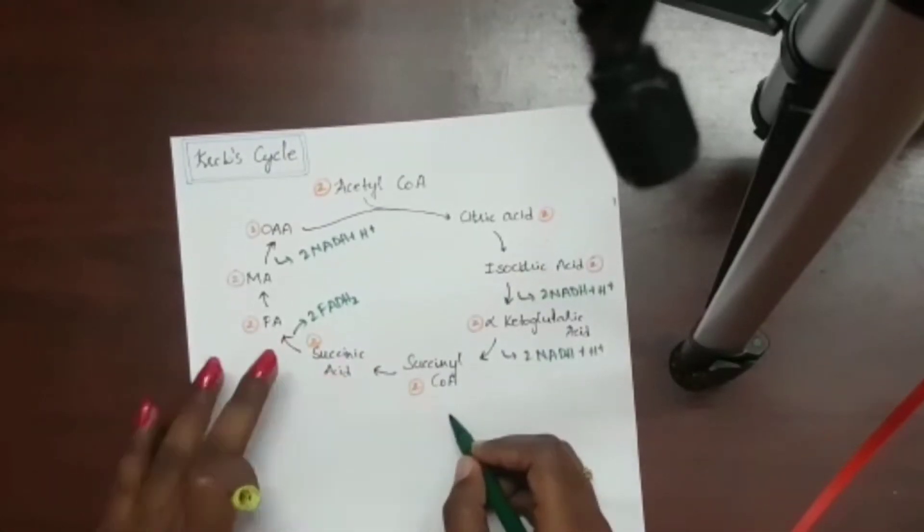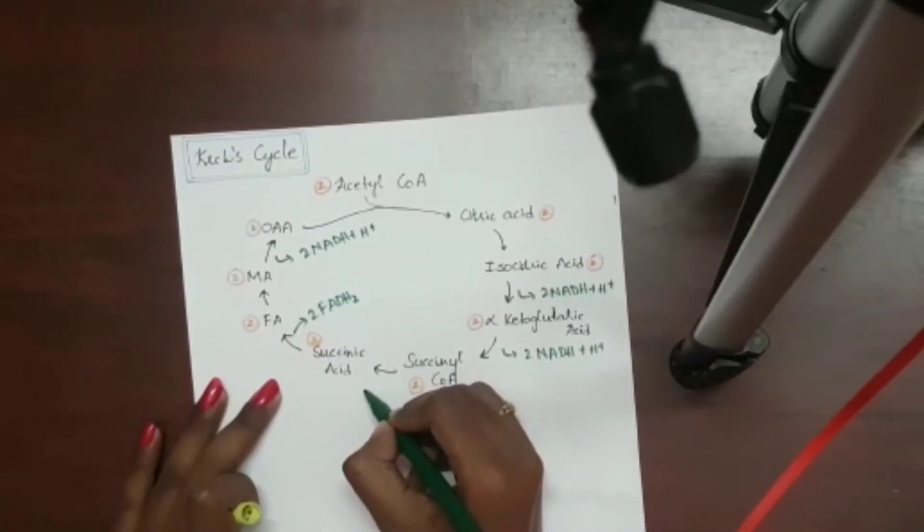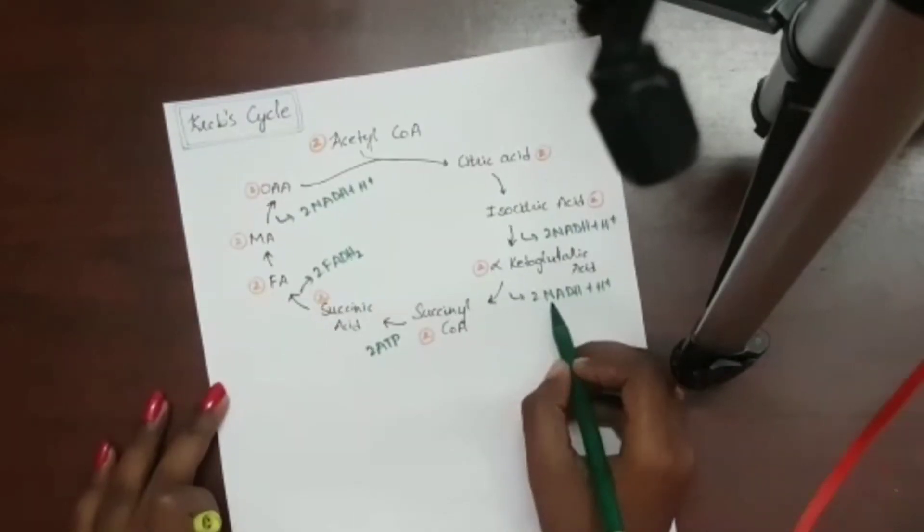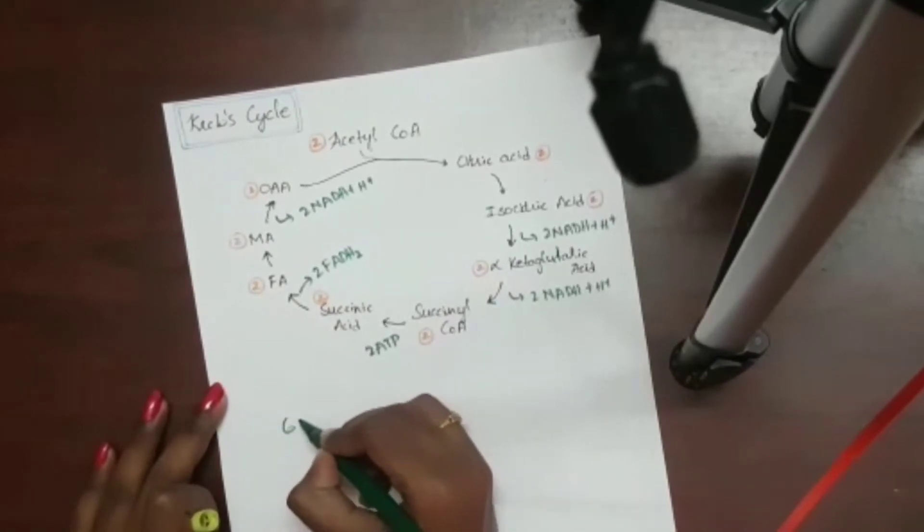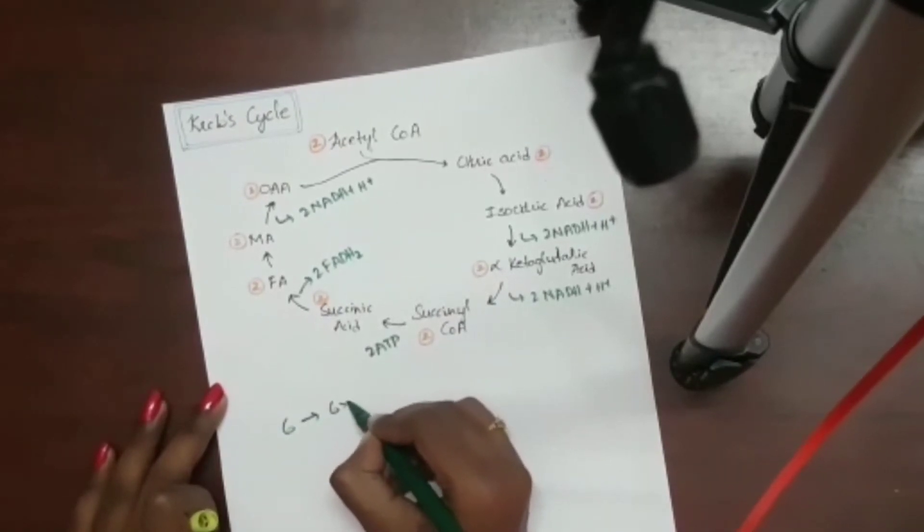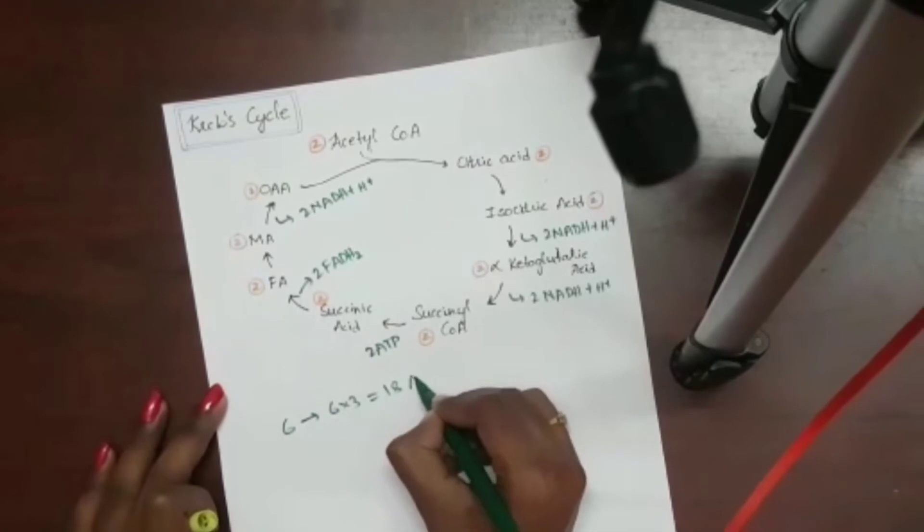And from succinyl coenzyme A to succinic acid, one substrate level phosphorylation occurs. So here 2 ATP are formed. If we calculate the total, 6 NADH++, H+ gives 6 times 3, 18 ATP.